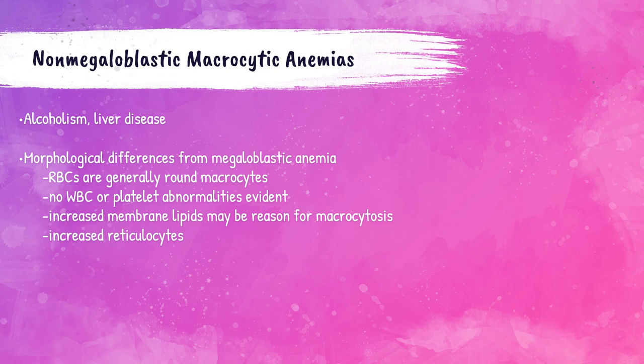Non-megaloblastic anemias are also characterized by macrocytic red blood cells with MCVs greater than 100 femtoliters. There are some morphological differences: the macrocytes are generally more round in shape due to increased membrane lipids. There are no white blood cell or platelet abnormalities in non-megaloblastic anemias, and there may be an increase of reticulocytes in the peripheral blood.